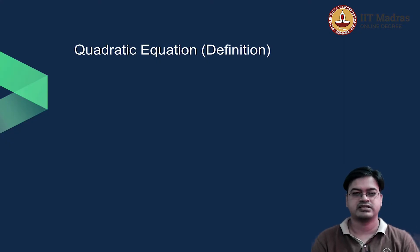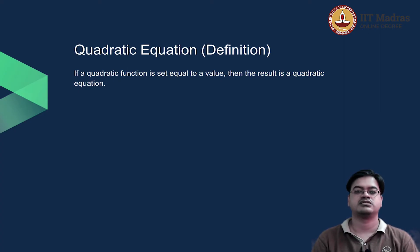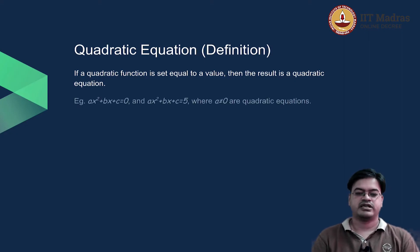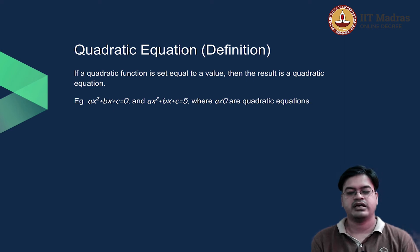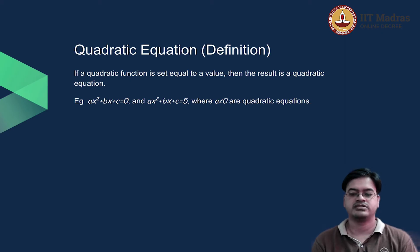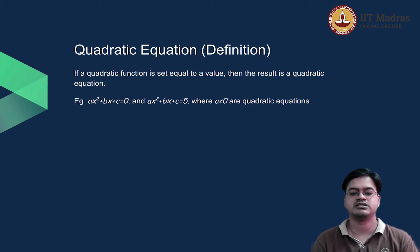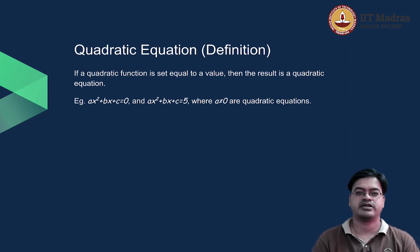First of all, let us understand what is a quadratic equation and how it is related to a quadratic function. Here is a definition: if a quadratic function is set equal to a value, then the result is called a quadratic equation. For example, ax² + bx + c = 0 is one quadratic equation where a ≠ 0. Similarly, ax² + bx + c = 5 is another quadratic equation.